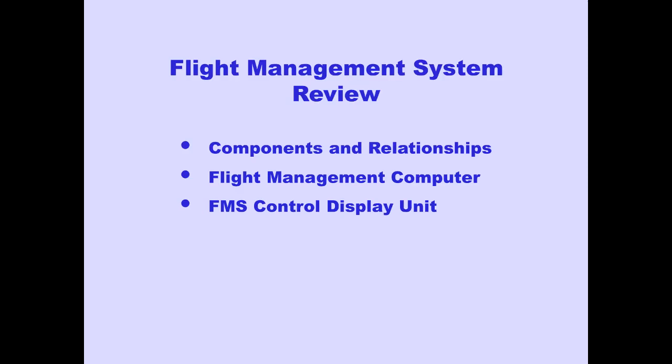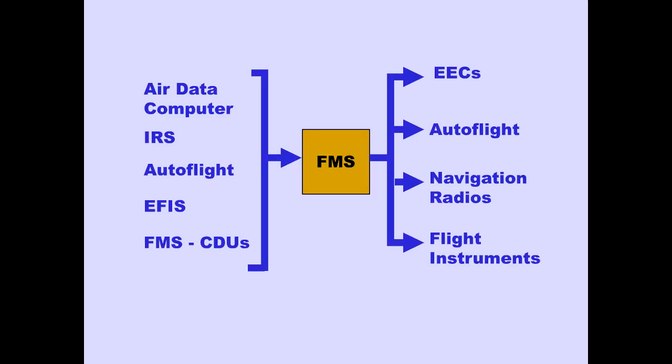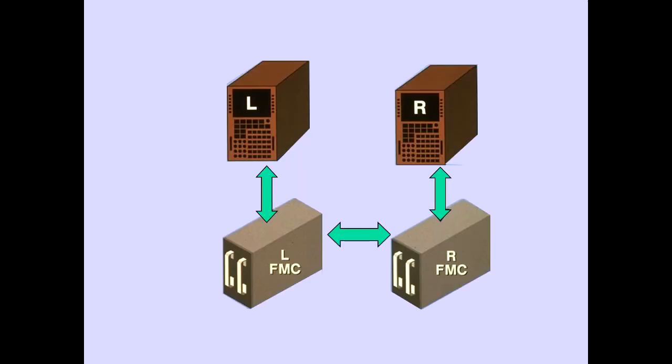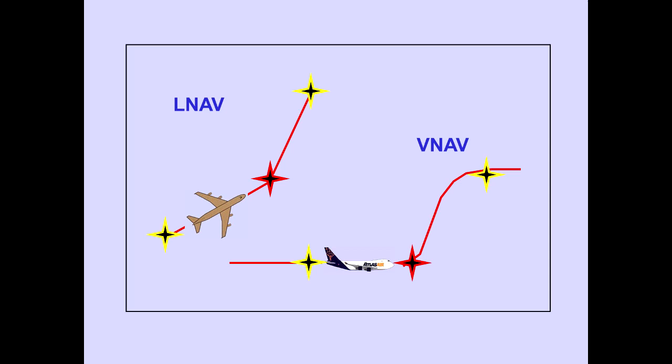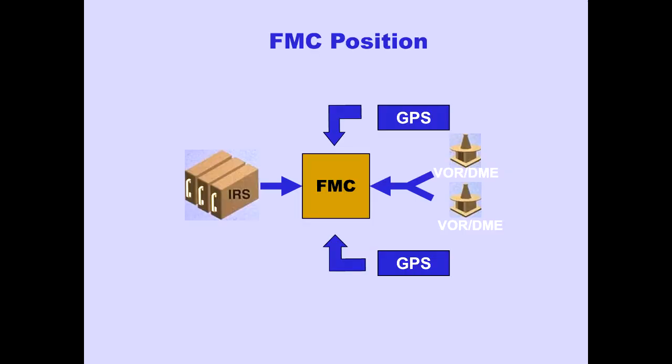Let's review the key points. The FMS communicates with several systems. The FMS-CDUs send and receive information to and from the FMCs. The FMCs navigate along a lateral and vertical path.